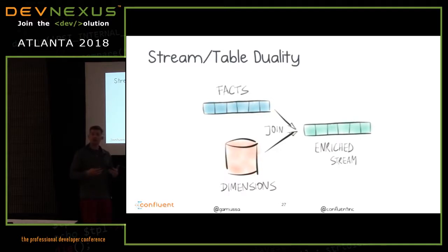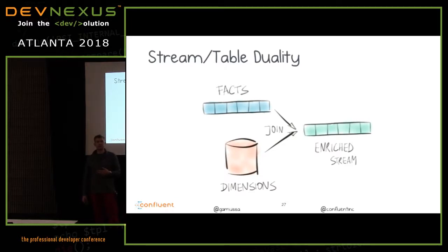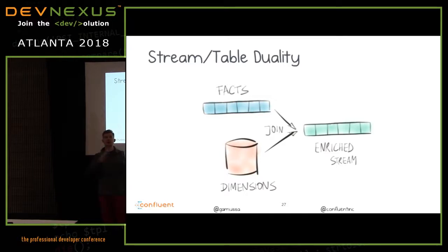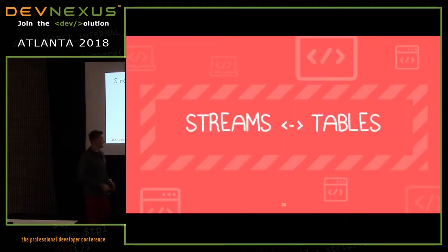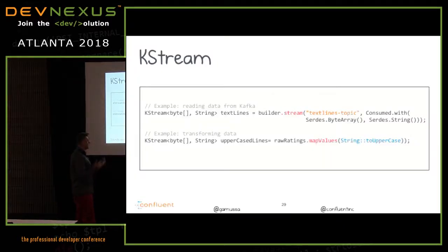An example of enrichment: you can join a stream of transactions with table data. You have a stream of user transactions; inside the compacted topic you have user IDs. Join by user ID and now you have an enriched transaction stream that includes user information like address, etc. These can then be further transformed. Okay — did someone say 'Victor, show us some code'? Let's do actual code — talk is cheap!